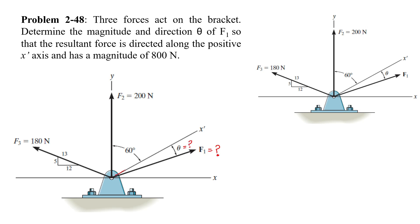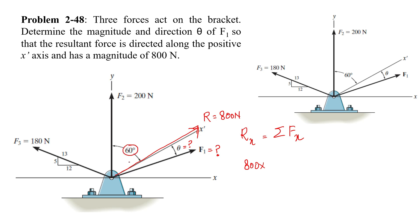The resultant is directed along this x-dash axis and has a magnitude of 800 Newton. We know that the x-component of the resultant force is equal to the summation of the x-components of all forces making this resultant of 800 Newton — meaning all the forces acting along the x direction. Since we have been given 60 degrees making an angle with the y-axis, we will be using sine 60 degrees instead of cosine.